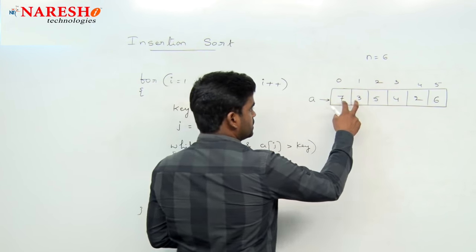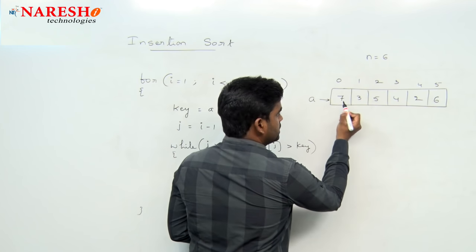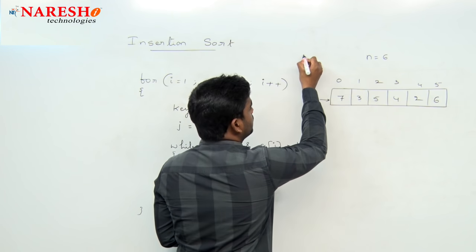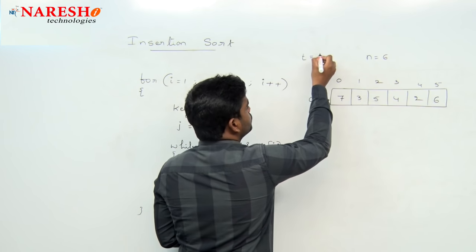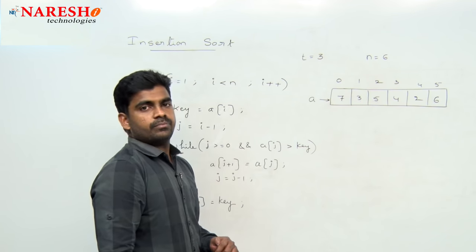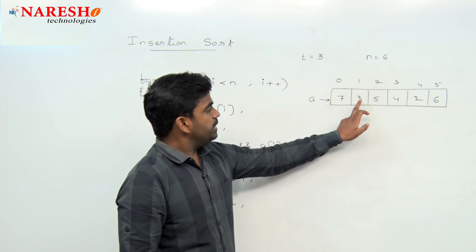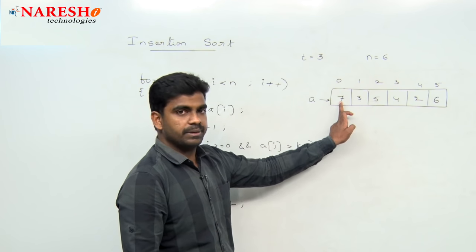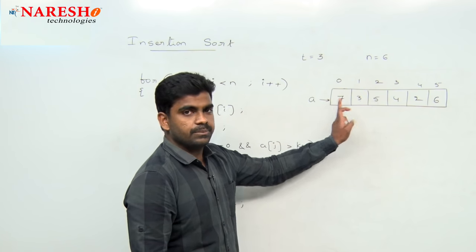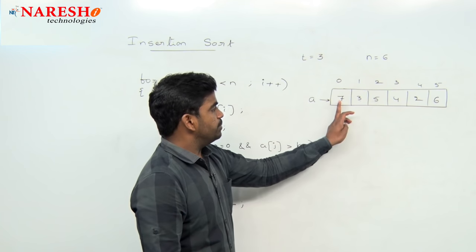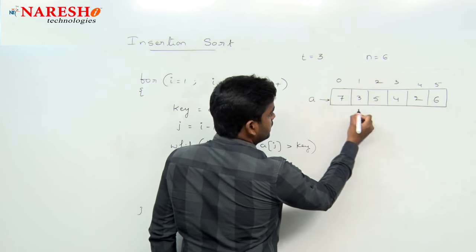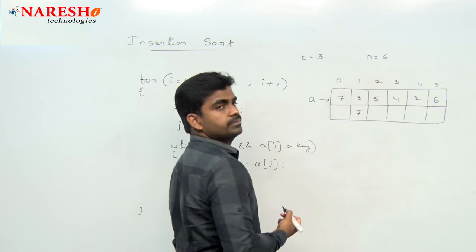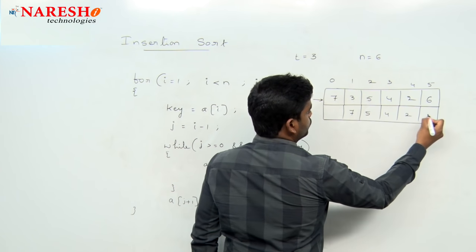For example, in the first step, 3 is compared with 7. The value 3 will be stored into a temporary variable — that temporary variable holds 3. We are comparing this temporary element with the index element, that is the previous element. If you find that the previous element has a greater value, then send that 7 to here. The remaining elements stay the same: 5, 4, 2, 6.